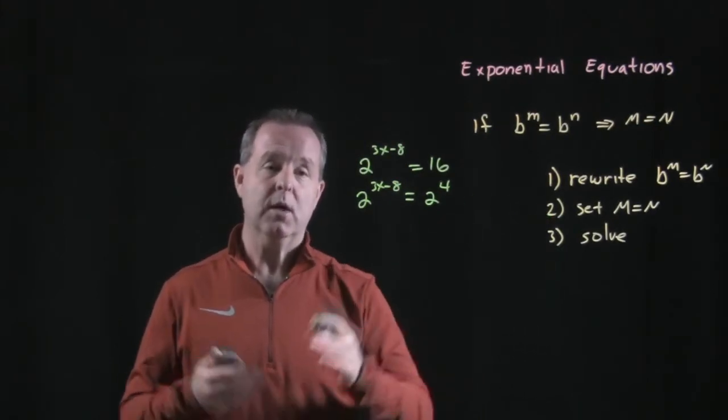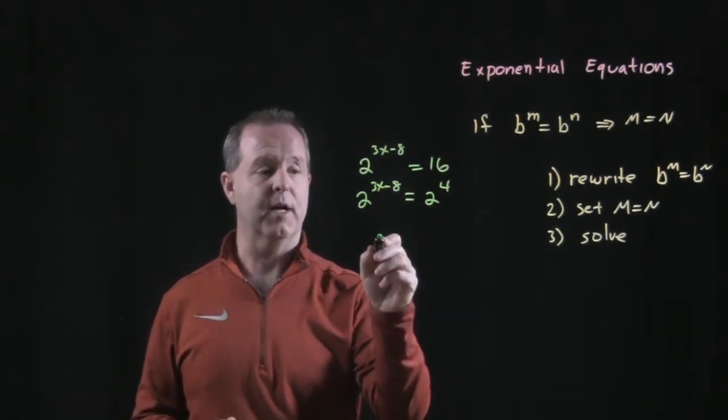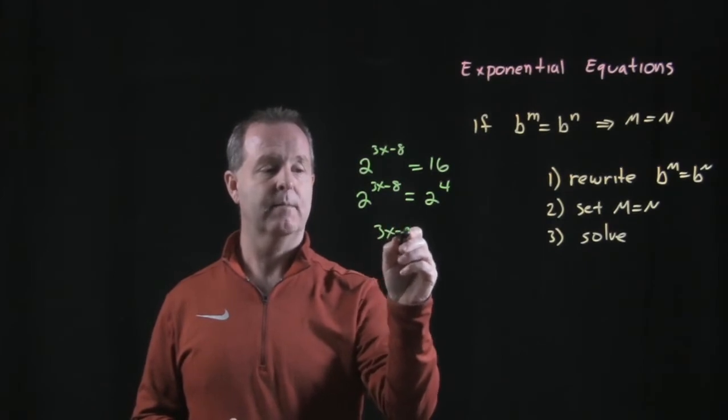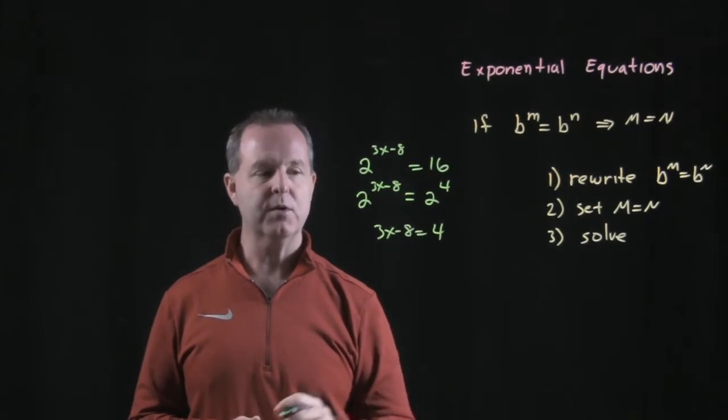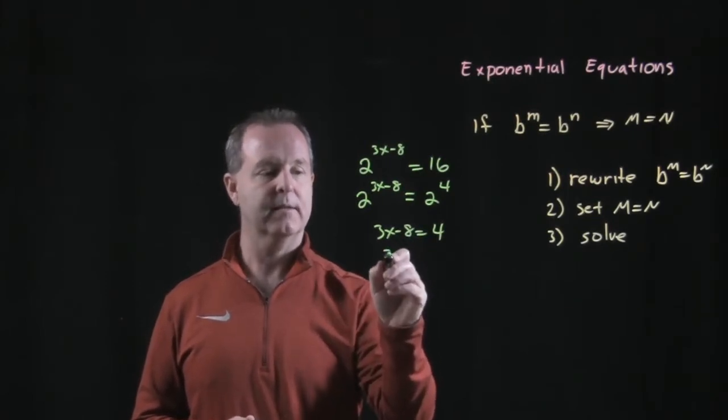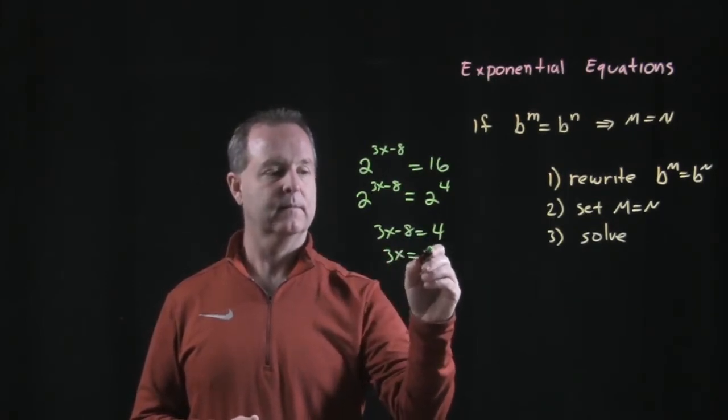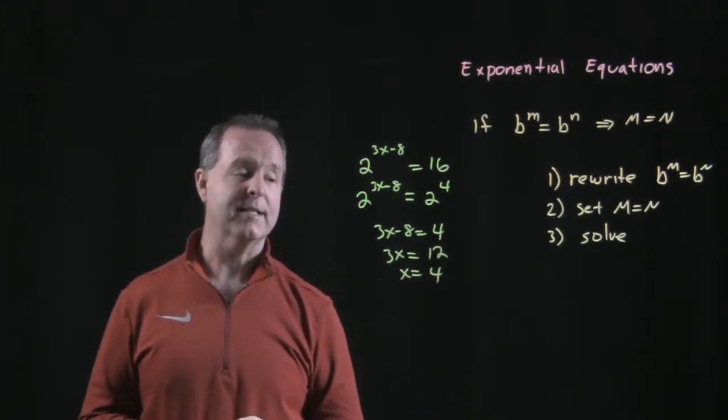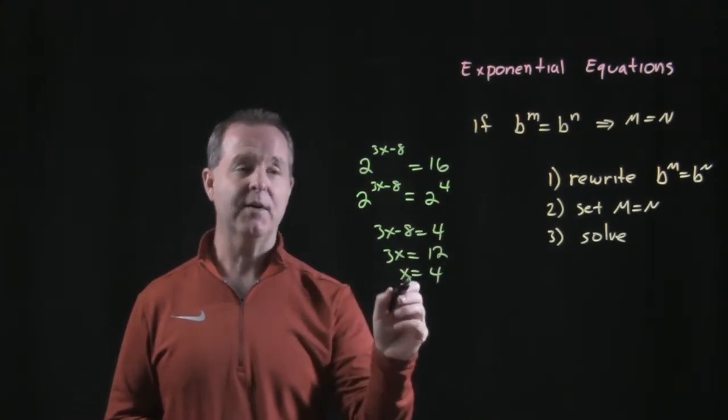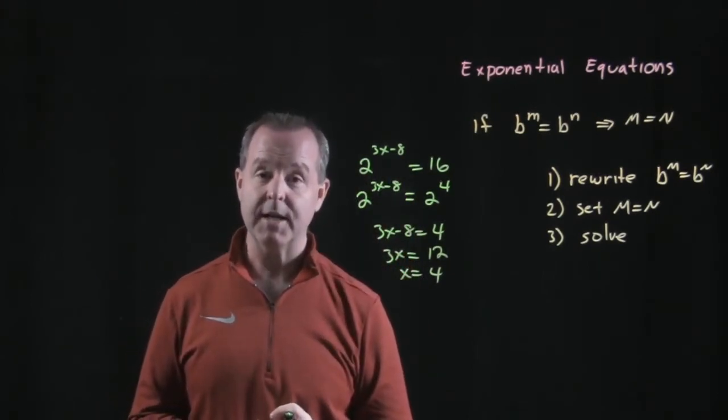Step 2 is to set the exponents equal to each other. 3x minus 8 equals 4. From there, we just put it in cruise control. Add 8 to both sides. X equals 4. That's the value that makes this exponential equation true.